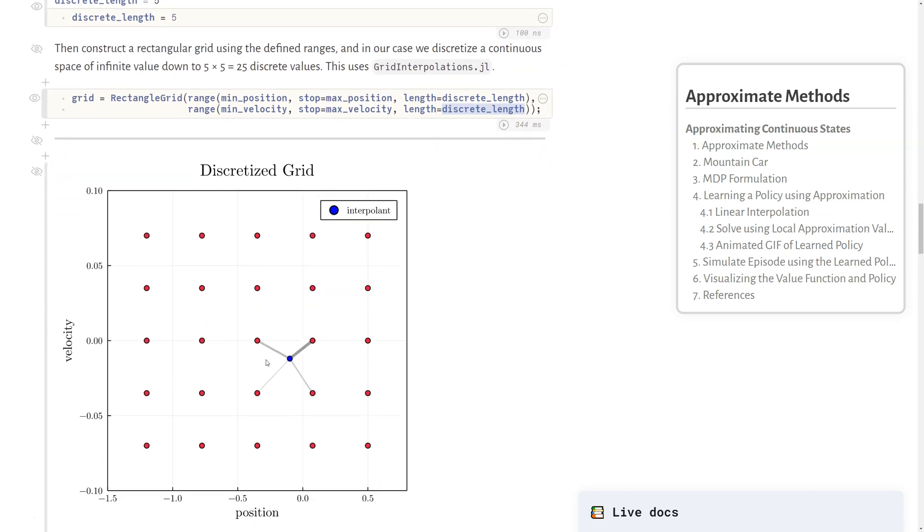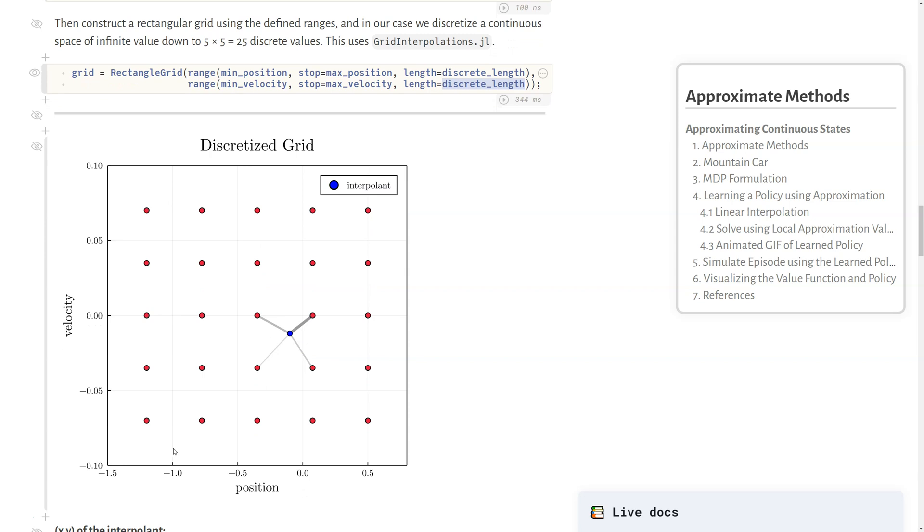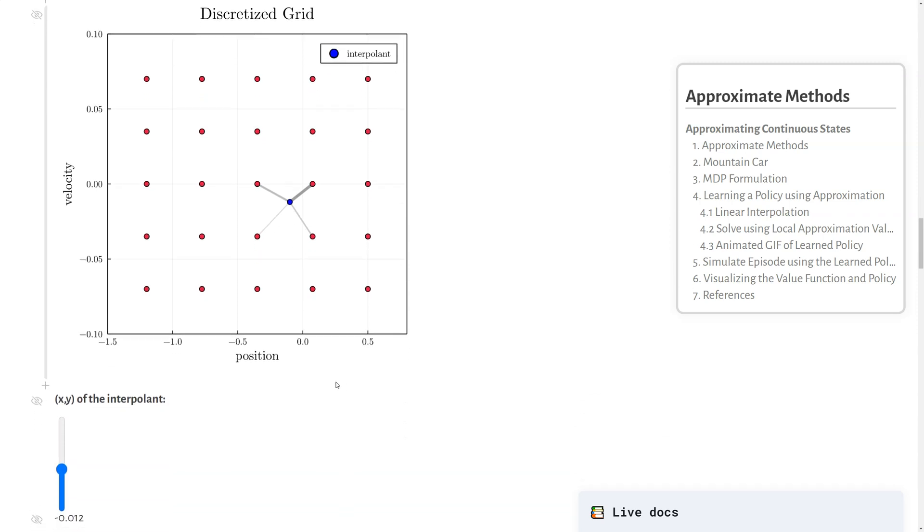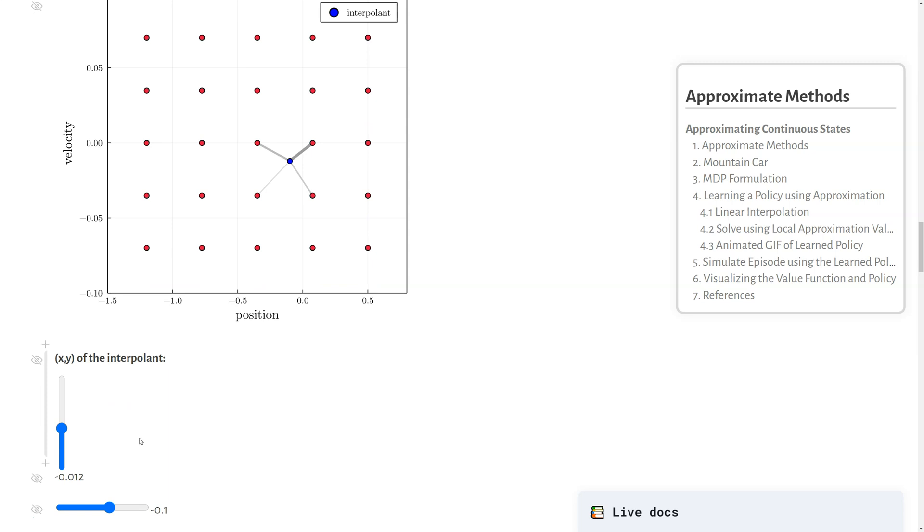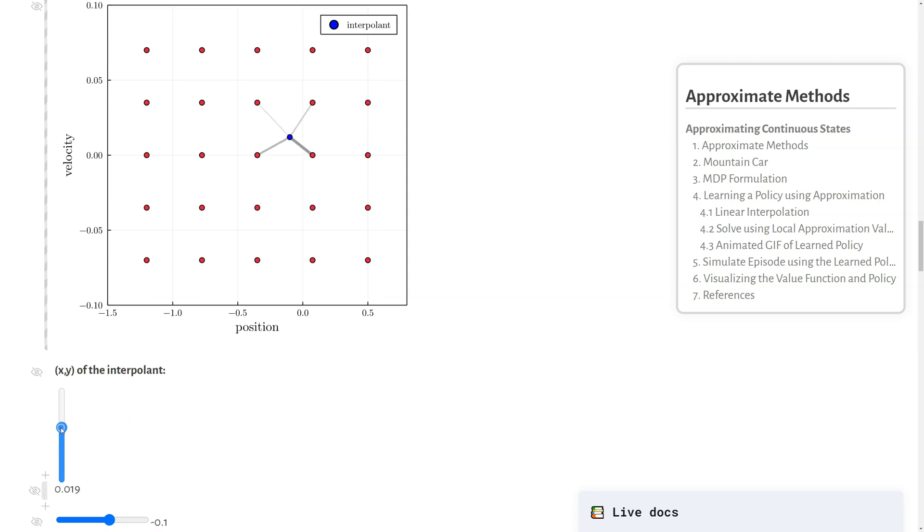We can actually see what this looks like here where this is us discretizing an infinite space of all possible values in this box. What's kind of fun is we can move around this grid and what we're going to try to do is using what's called local approximation value iteration.